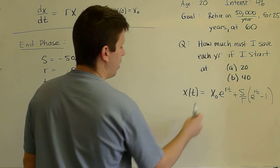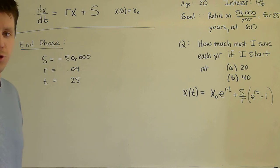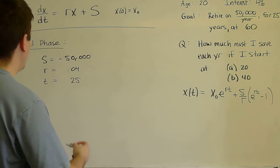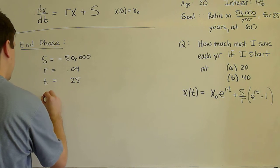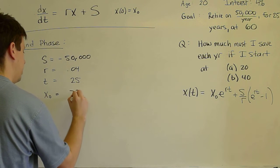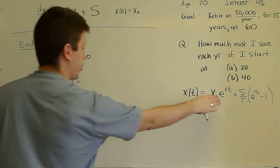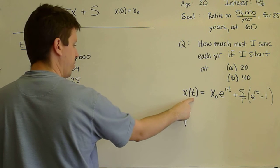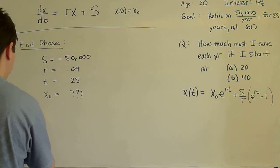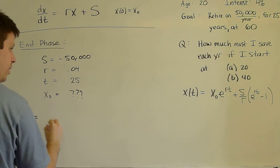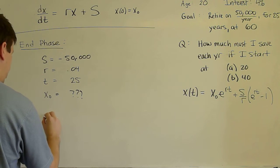What balance of money do we need at age 60 in order to achieve this plan? So X₀ is the unknown. And we plug this in. We plug in these numbers to our solution. We say that at T = 25, X = 0. So we say 0 = X₀, the unknown.